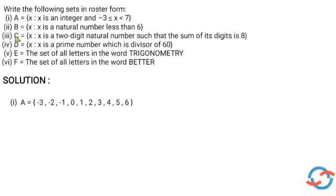Next, B is equal to the set of all x such that x is a natural number less than 6. Natural numbers start from 1, so we go from 1 to 5.